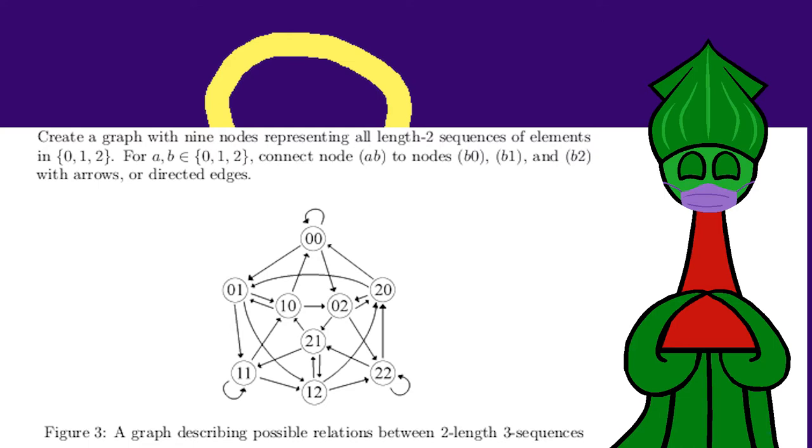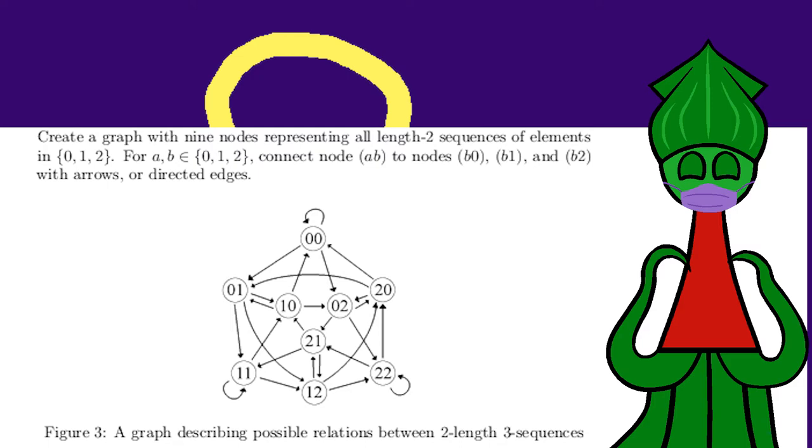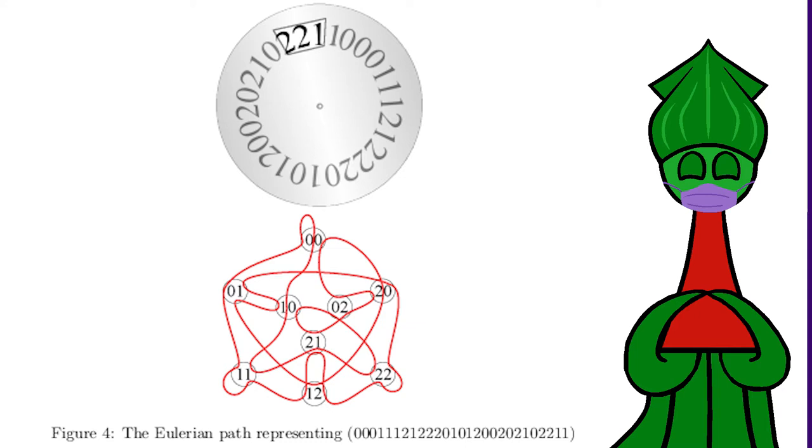No matter what we choose for k and n, every vertex has k edges out and k edges in. Two times k is always even. So there's always a Debron sequence in here somewhere, usually lots because there are lots of Eulerian paths. That's rad, huh?